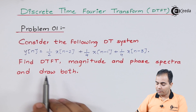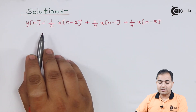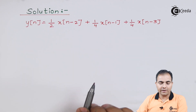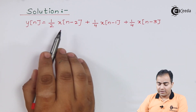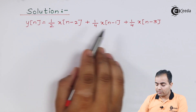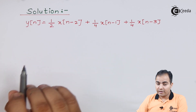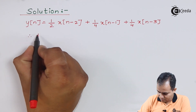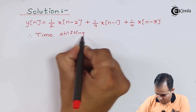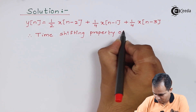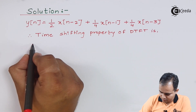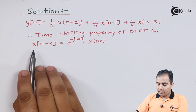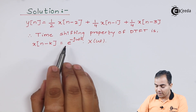Before moving to the solution, you should know the properties of DTFT and the definition of DTFT. This is our system equation: y[n] = (1/2)x[n-2] + (1/4)x[n-1] + (1/4)x[n-3]. On the right-hand side, all the x[n] functions are delayed, which means we are going to use the time-shifting property of DTFT. The property statement is: DTFT of x[n-k] = e^(-jωk) · X(ω).